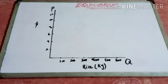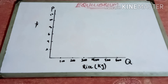I've plotted price again on the vertical axis and quantity on the horizontal axis. Today on this graph we are going to study the equilibrium — how we get the equilibrium using the supply and the demand curve.